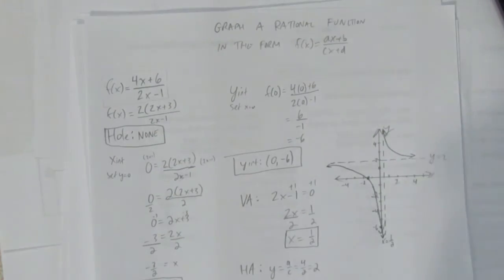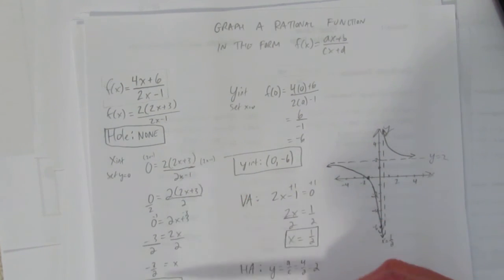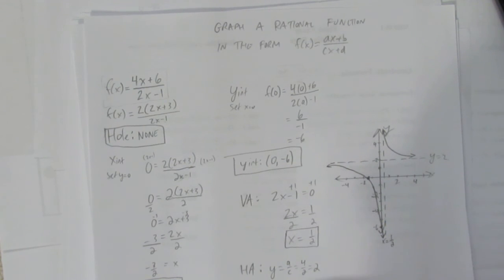That's how you graph a rational function in the form (ax+b)/(cx+d). Check for holes, get the x-intercept, get the y-intercept, get the vertical asymptote, get the horizontal asymptote, and then sketch. Done.